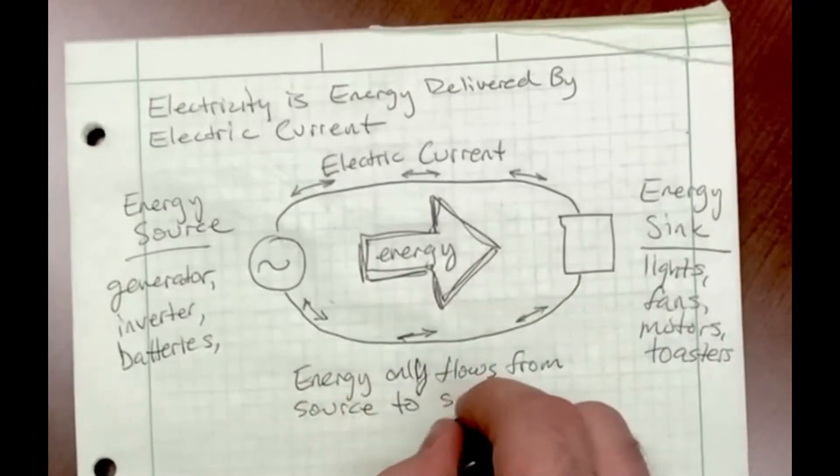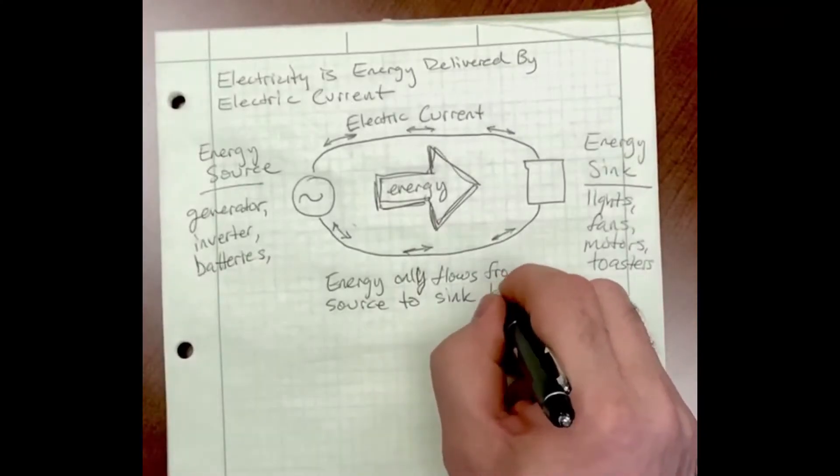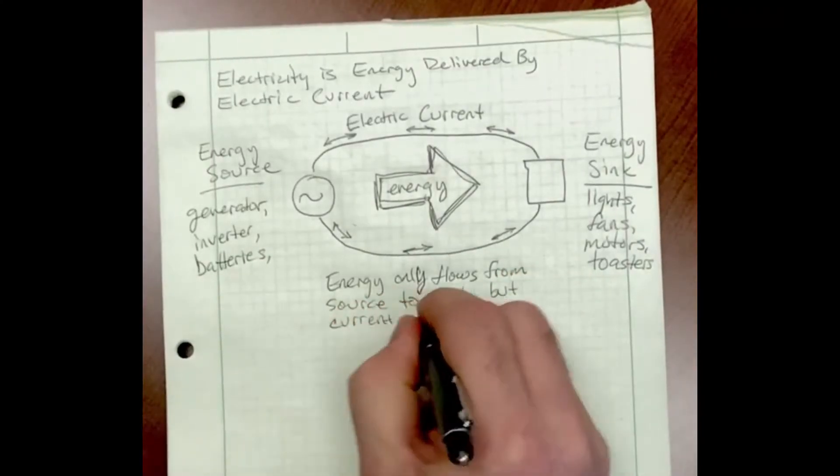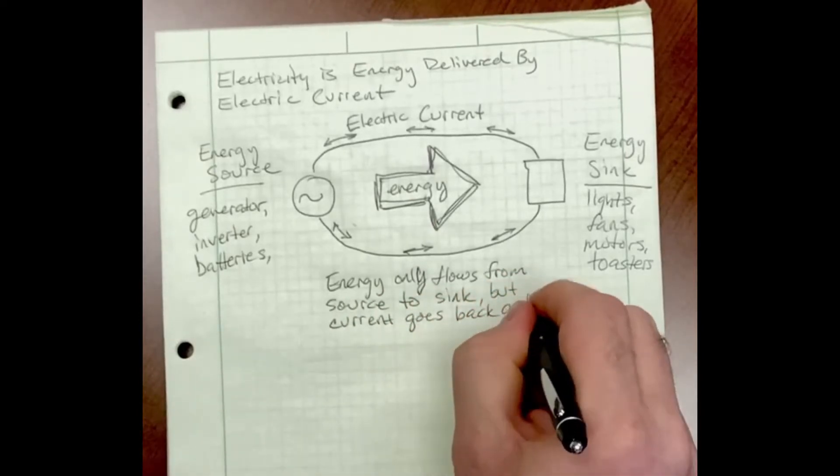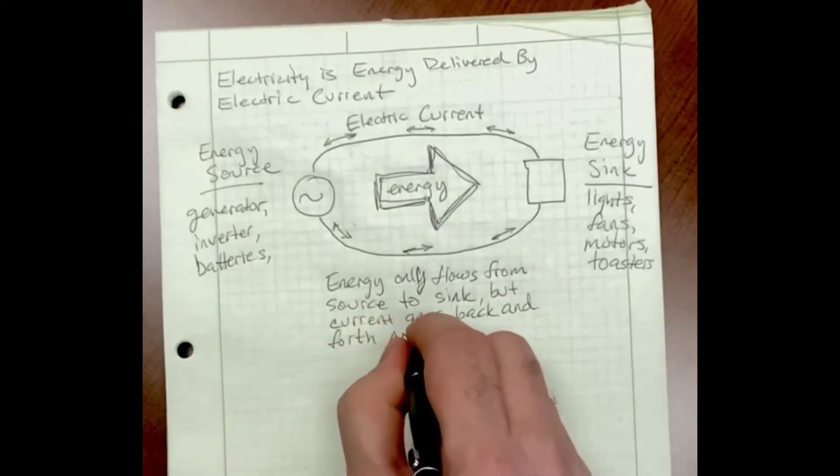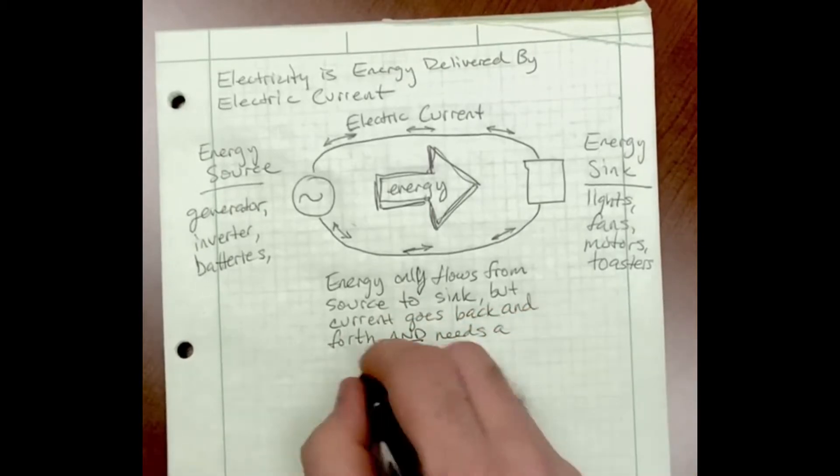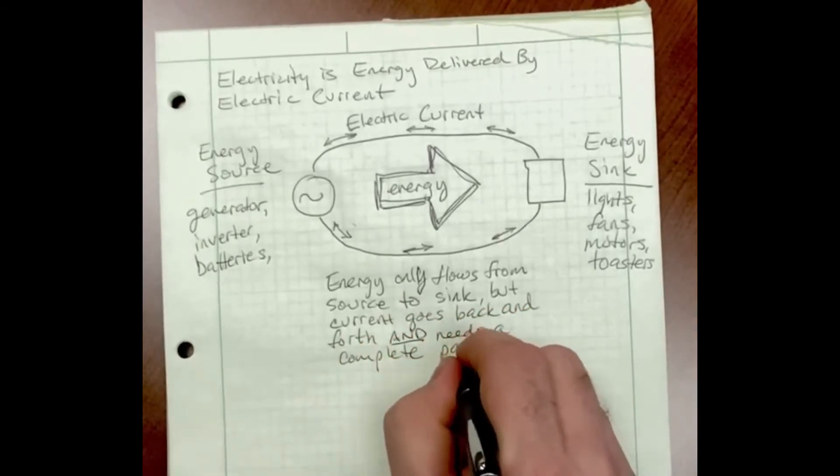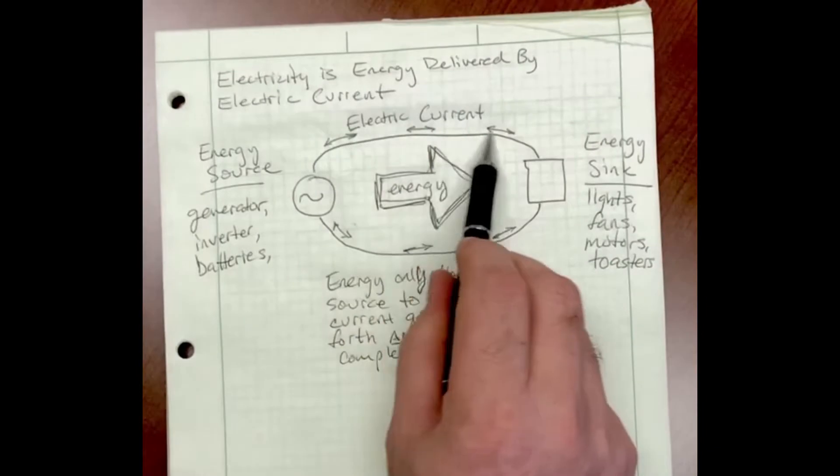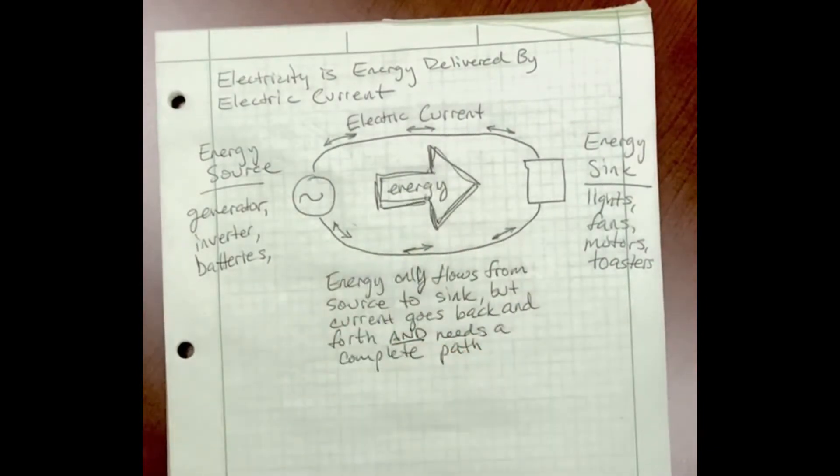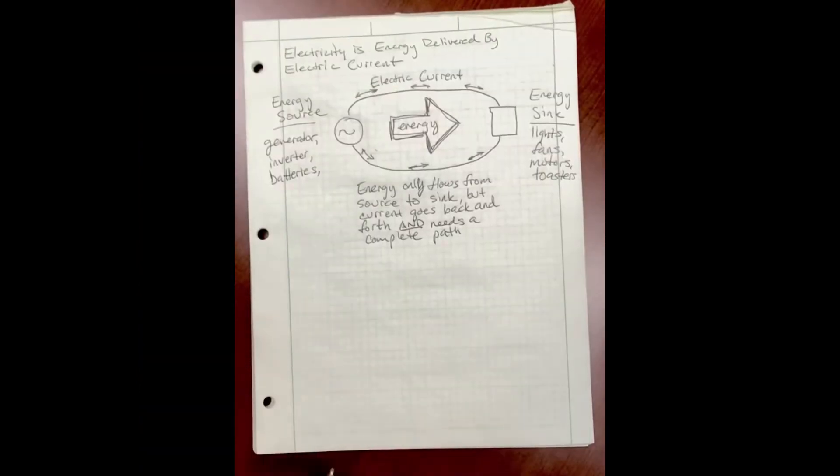Energy only flows from the source to the sink even though the electricity, the electric current, goes back and forth. Furthermore, the electric current needs a complete path to both two conductors, one from the source to the sink and another from the sink back to the source.